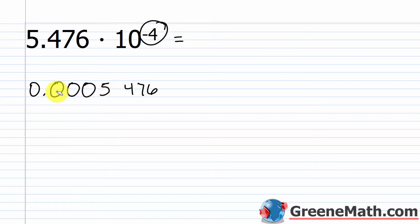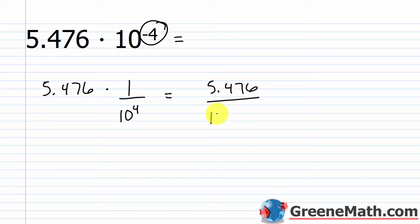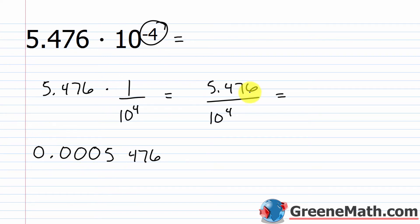You could do it the long way — writing 5.476 over 10 to the fourth power and noting there are four zeros — but moving the decimal point four places to the left directly is much quicker.